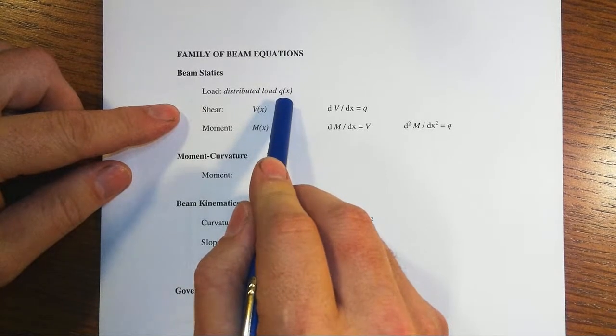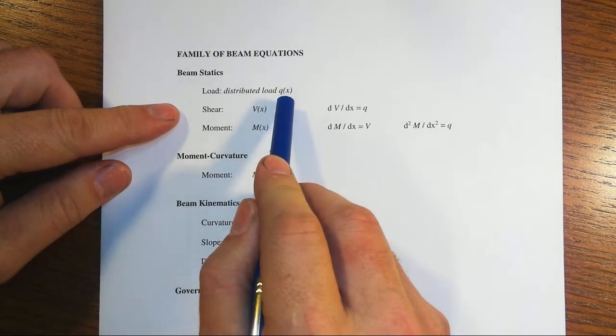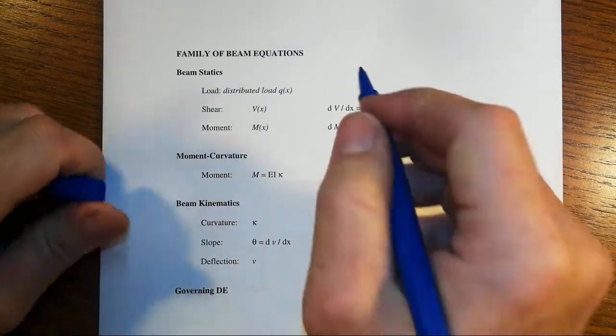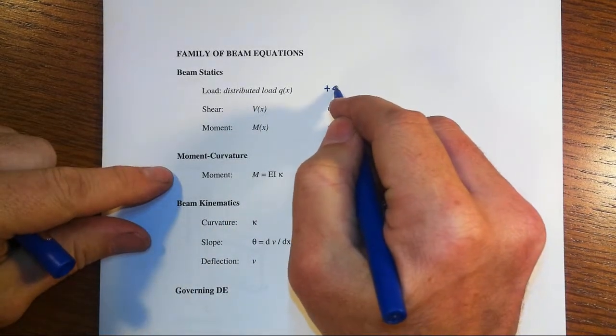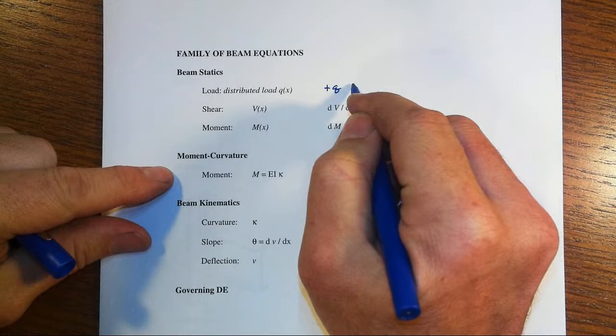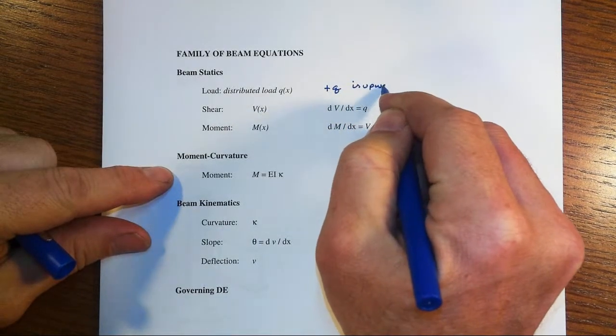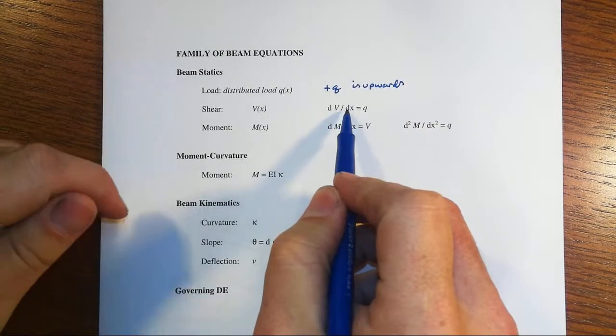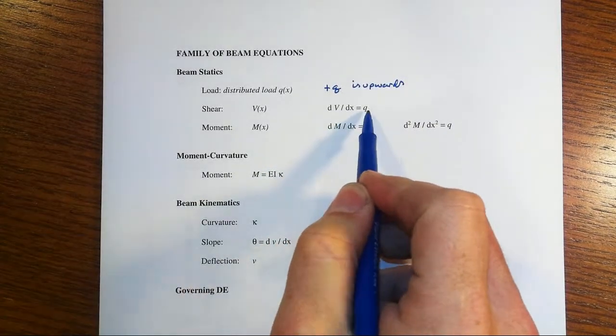Some will use Q. Those are the two most common symbols. Some will define the positive direction up, some will define it as down. We're going to define it as positive Q is upwards, and that the first derivative of the shear is equal to the load intensity.